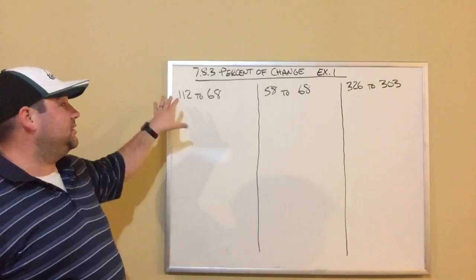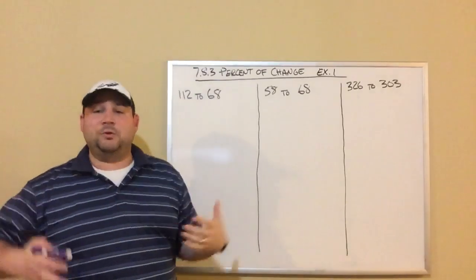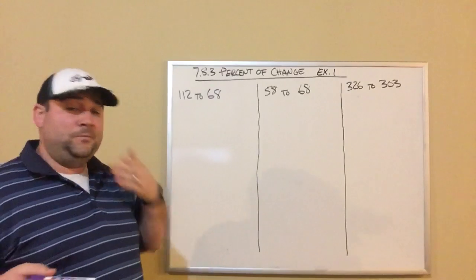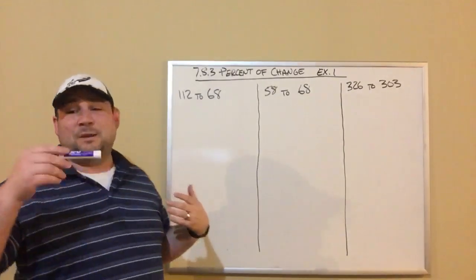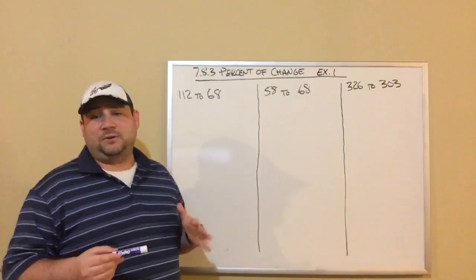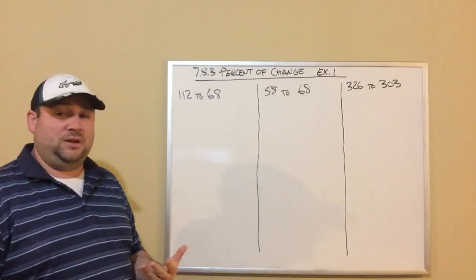So we're just going to take three basic problems here where we're starting with a number and we end up with a new number and we're being asked to find the percent of change. So you should have that formula on your notes. You can see it says amount of change over original amount. And that's what we're going to calculate. The amount of change is basically the difference of the two numbers. We subtract the two numbers.